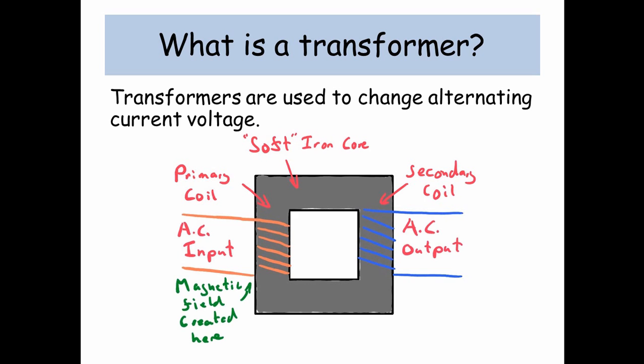Well, at the primary coil, the AC input induces a magnetic field inside the soft iron core. The magnetic field then moves through the iron, and then finally an AC current is induced at the secondary coil.